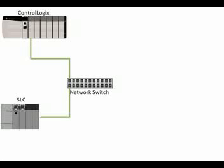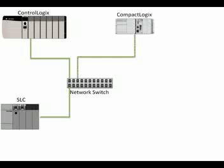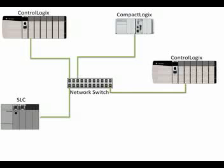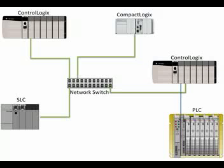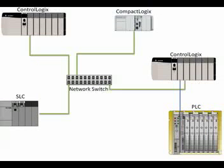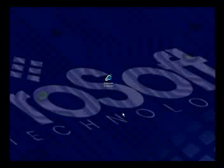I'm going to demonstrate a ControlLogix processor communicating via Ethernet IP to a SLC processor, which is communicating to a CompactLogix processor, and a PLC5 processor by way of a RemoteRack ControlLogix via Ethernet IP. So let's go ahead and get started.